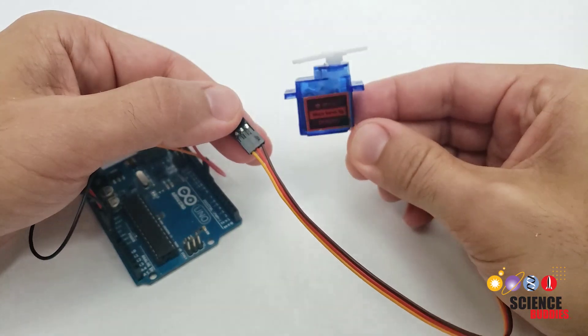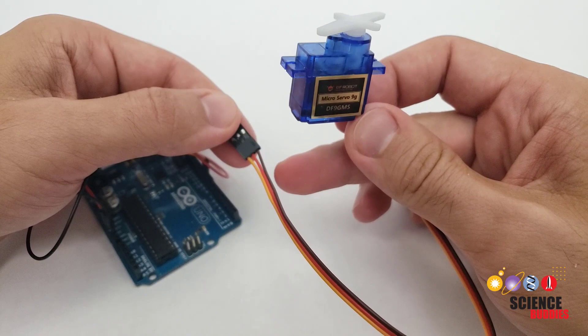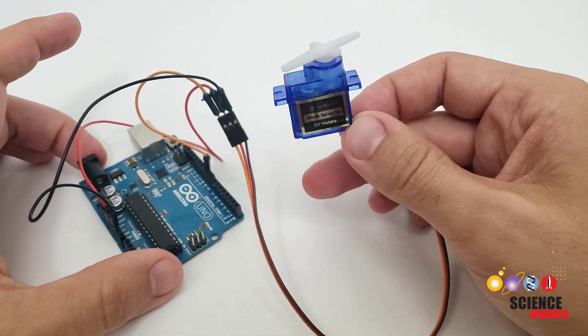Let's start with the positional servo. It has three connections for signal, power, and ground. In this case, that's the orange, red, and brown wires respectively, which I have connected directly to the Arduino.